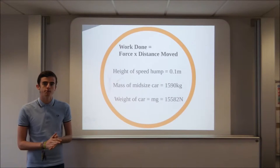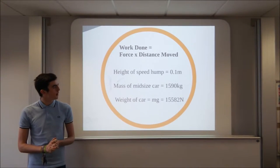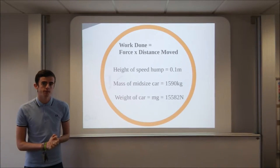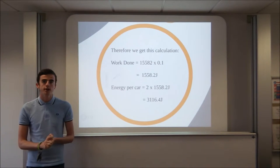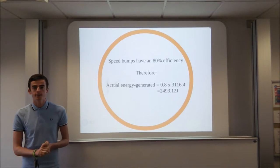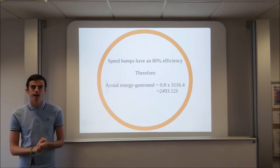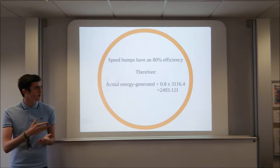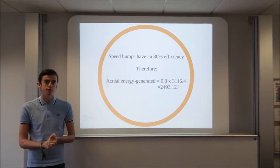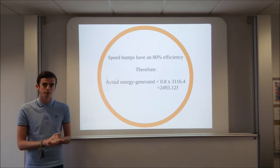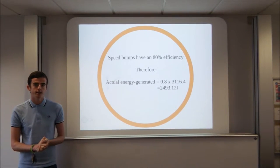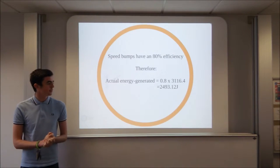The law in the UK states that any traffic calming device can have a height of no more than 10 cm, and the average mass of a mid-sized car in the UK is 1,590 kg, or a weight of 15,582 N. Assuming the speed hump is fully depressed, the energy per depression is 1,558.2 joules. Since the speed hump is depressed twice due to the car passing over with its two sets of wheels, the energy per car will be 3,116.4 joules, assuming the full weight of the car is applied to each hump. Due to the efficiency of the system only being 80%, we can only harness 2,500 joules of this energy.